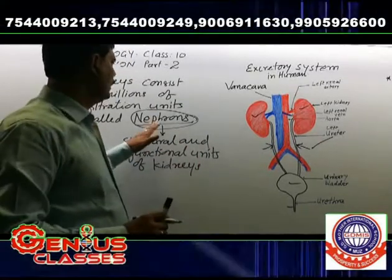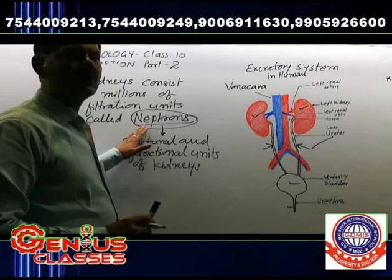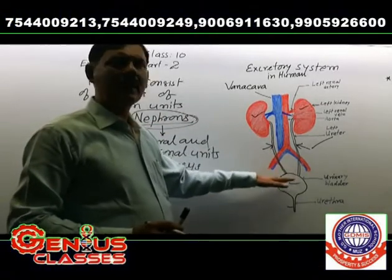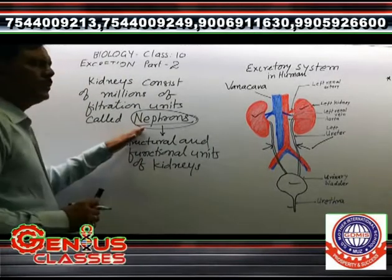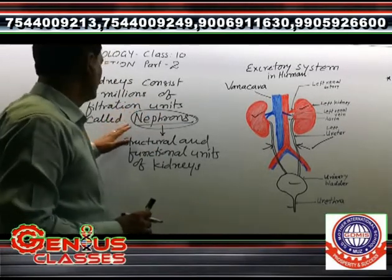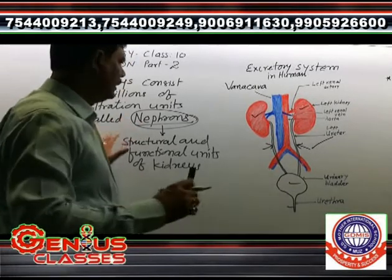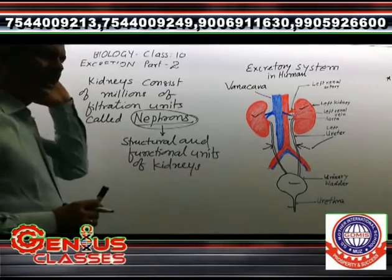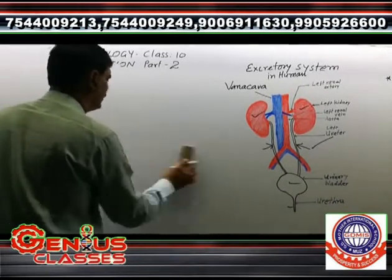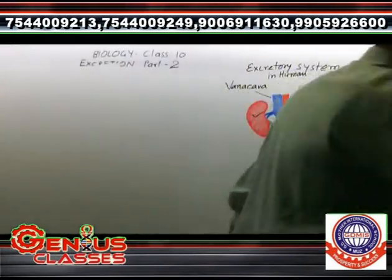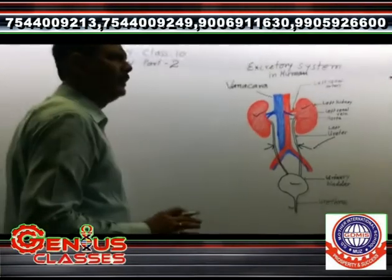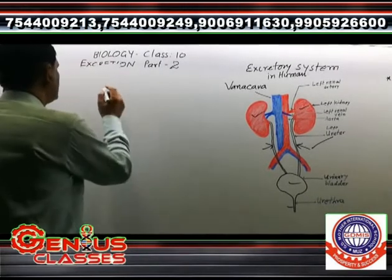The basic filtration is carried out in the millions of nephrons inside the kidneys. These are the structural and functional units of the kidneys. The filtrate produced is collected into collecting tubes, which open up into the ureter, and through the ureter the filtrate is collected and passed on. We will discuss the detailed structure of the nephron in the next part of this lesson.